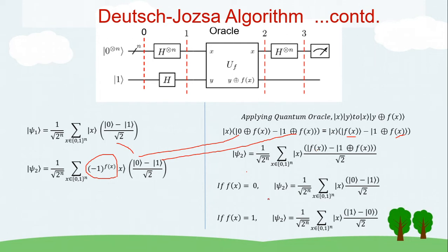If f(x) is zero, we get (|0⟩−|1⟩)/√2, which stays the same. If f(x) is one, we get (|1⟩−|0⟩)/√2, meaning the signs get interchanged. This can be written as (−1)^f(x) · (|0⟩−|1⟩)/√2. So if f(x) is zero the expression is unchanged; if f(x) is one the signs are flipped. This is the key phase kickback mechanism — the factor (−1)^f(x) is the scalar that appeared in our expression for station two.